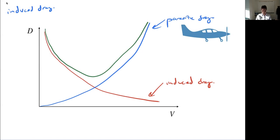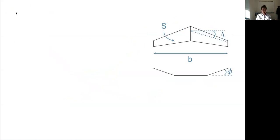Before explaining why induced drag is high at low speeds, let me introduce some nomenclature. We use b for span — the projected span, so a vertical winglet doesn't increase it. S is used for wing area. Capital lambda is wing sweep, often defined at the quarter chord. Phi is used for dihedral angle; as phi goes to 90 degrees that would be a vertical winglet.